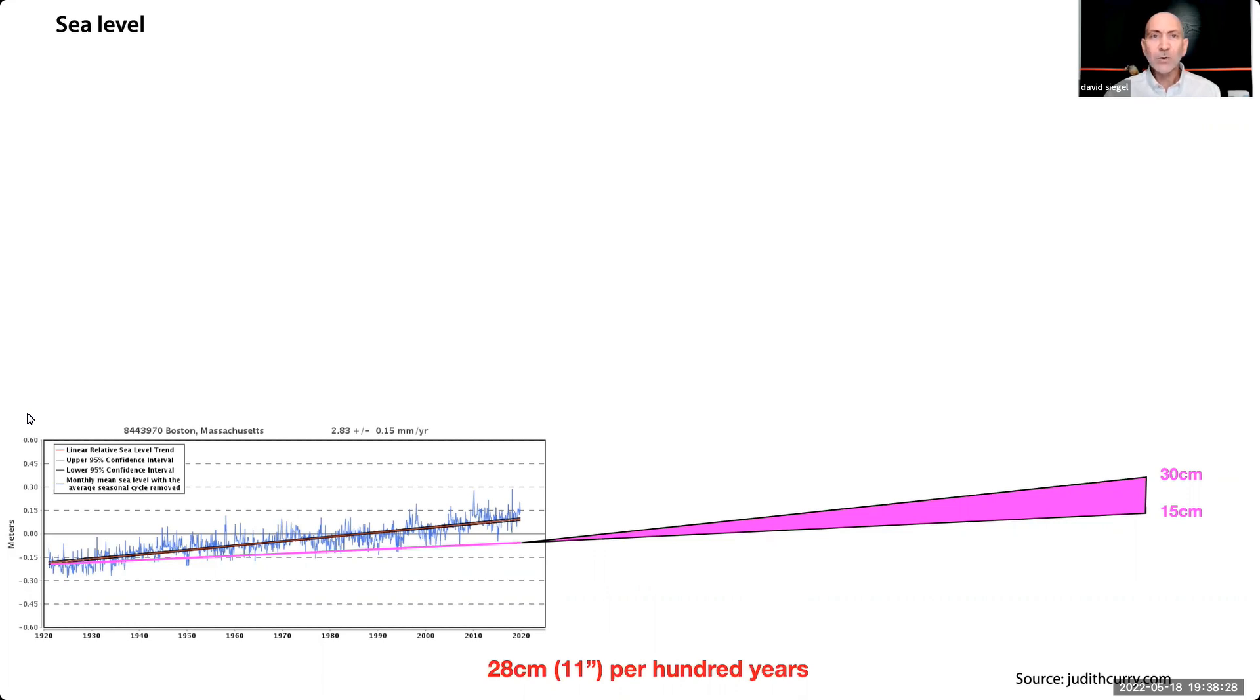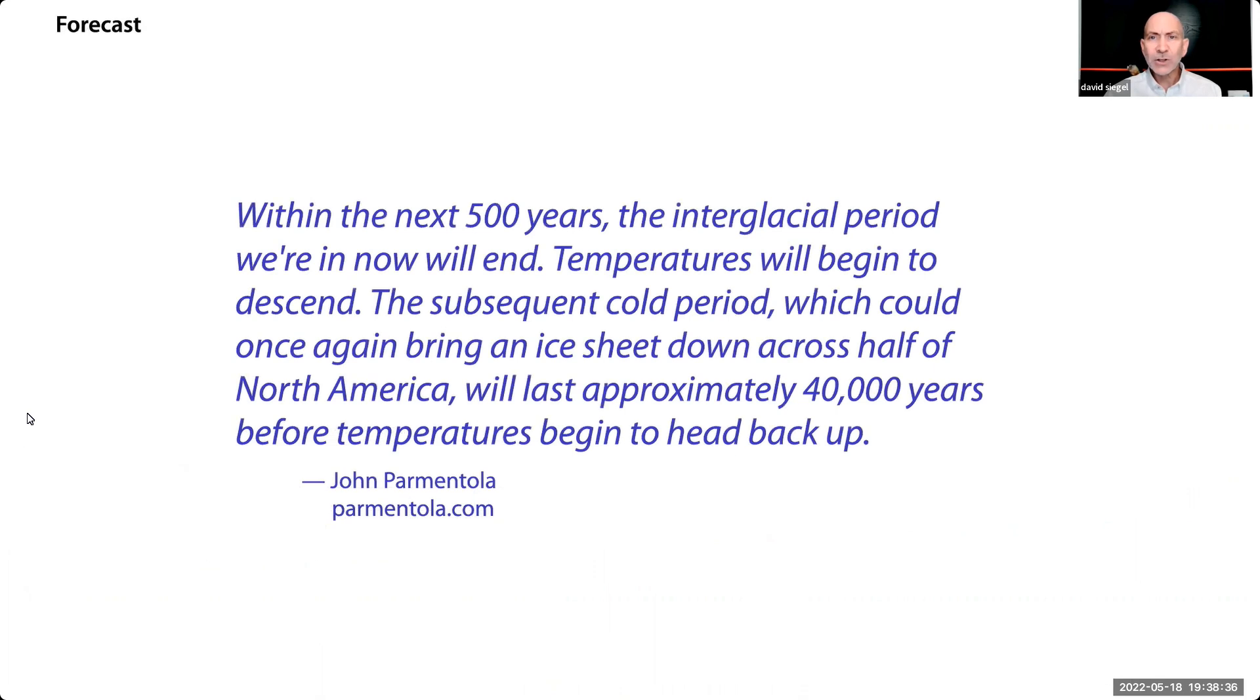Now let's look at the next 100,000 years. According to researcher John Parmentola, within the next 500 years, the interglacial period we're in now will end. Temperatures will begin to descend. The subsequent cold period, which could once again bring an ice sheet down across half of North America, will last approximately 40,000 years before temperatures begin to head back up.